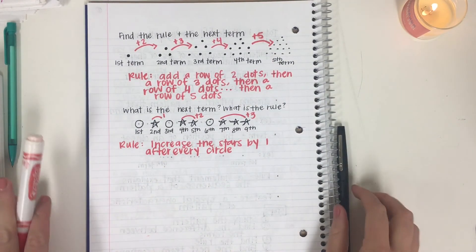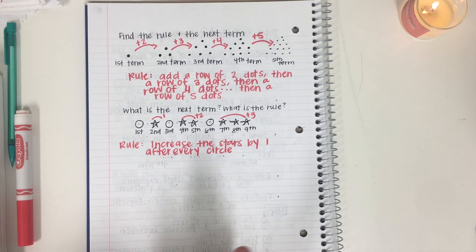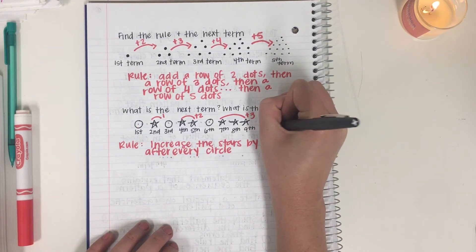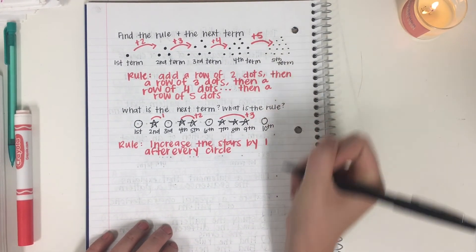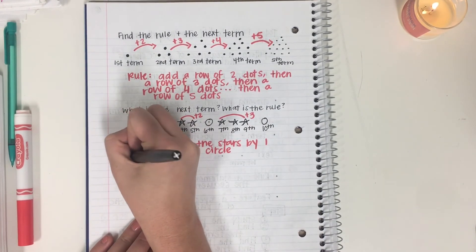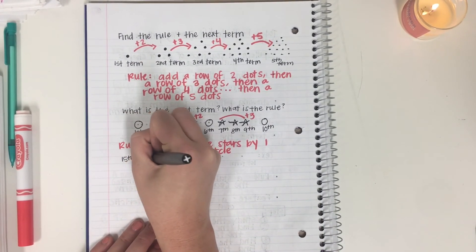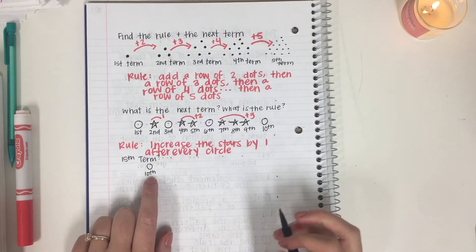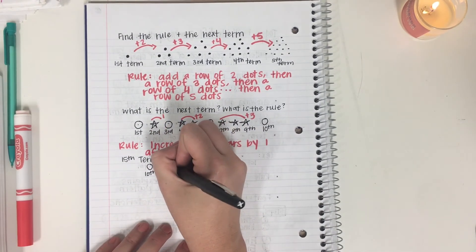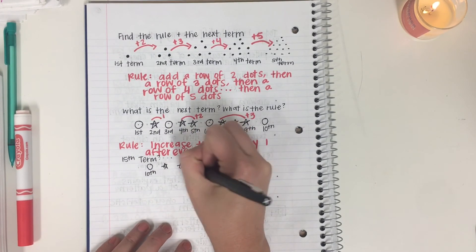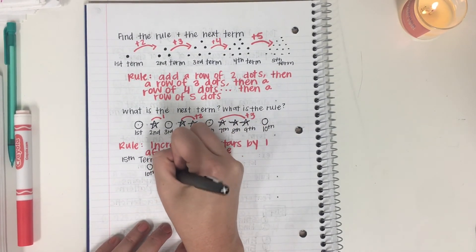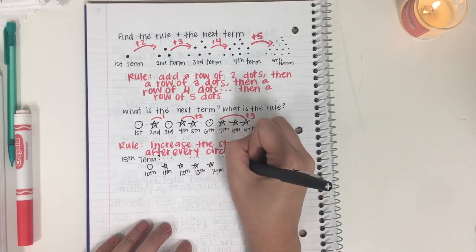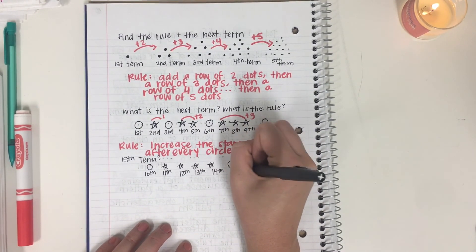Now we need to figure out the next term. The tenth term would be a circle. What about the fifteenth term? Well, the tenth term is a circle, and we know after each circle it adds by one. We have three stars here, so the next needs four. So: eleventh, twelfth, thirteenth, fourteenth — that means our fifteenth term would be a circle again.